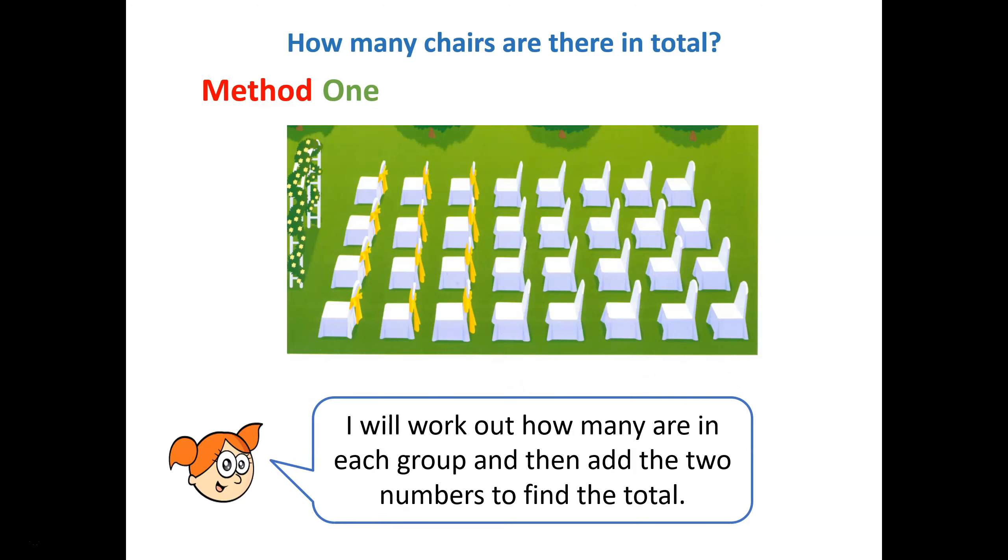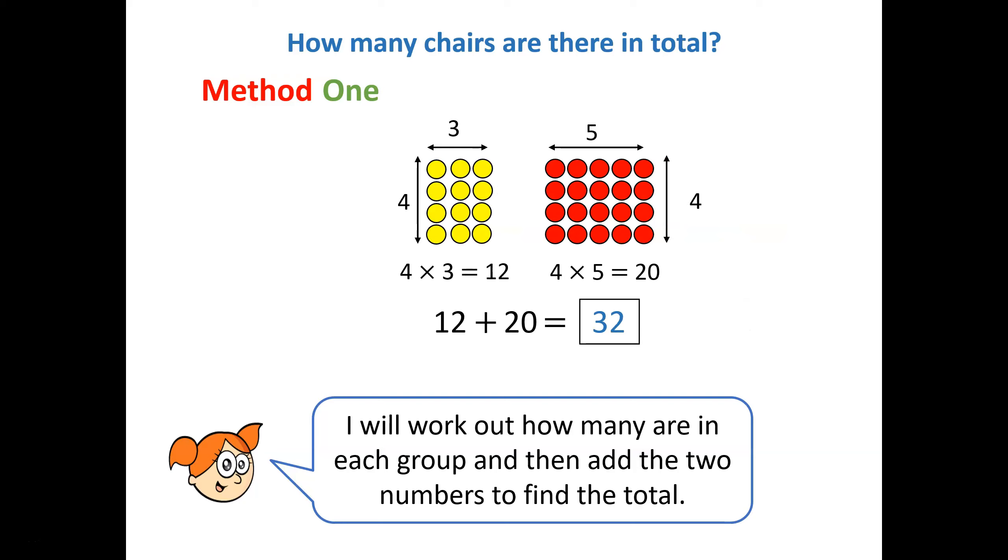She says I will work out how many are in each group and then add the two numbers to find the total. Let's represent this using counters. There are two groups. The yellow counters represent the chairs with bows and the red represent the plain chairs. Each group has four rows. We can approach our problem by finding out the total number in each group and then adding the two numbers together. So the yellow array shows us 4 times 3 is equal to 12. The second array representing the plain chairs shows the calculation 4 times 5 is equal to 20. To solve the problem, how many chairs in total, we can add these two numbers together: 12 add 20 and we can see that's 32.